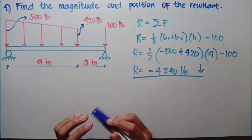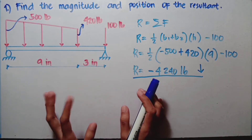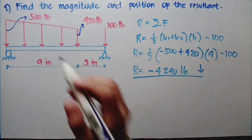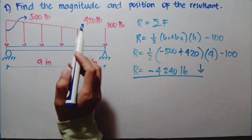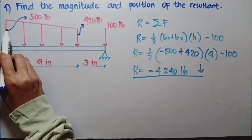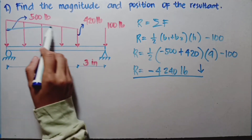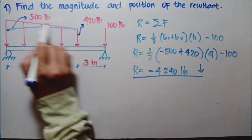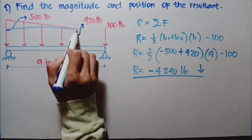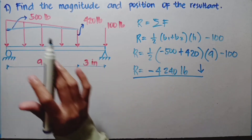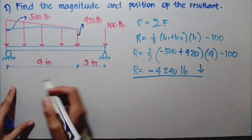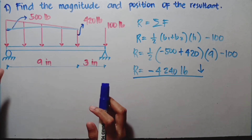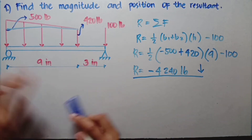There is another way to solve the magnitude of a resultant. For example, with this figure — since it's a trapezoid — if we cut it from here to the end of the force, we can see that we get one triangular load and one uniform load. This only applies to a trapezoid. That means we can separate the two: the triangular and the uniform.